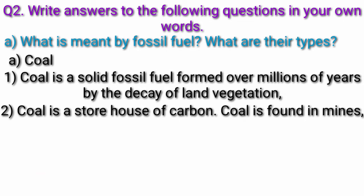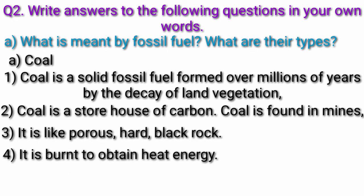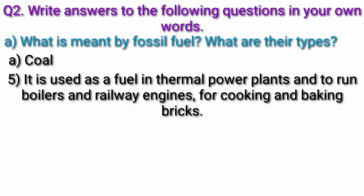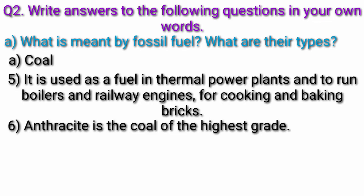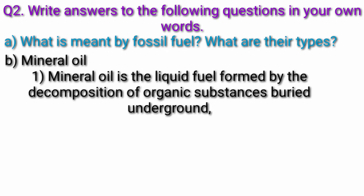Coal is a solid fossil fuel formed over millions of years by decay of land vegetation. Coal is a storehouse of carbon. It is found in mines and is like a porous hard black rock. It is burned to obtain heat energy and used as fuel in thermal power plants, to run boilers and railway engines, and for cooking and baking bricks. Anthracite is the coal of the highest grade. Producer gas and water gas are obtained from coal.